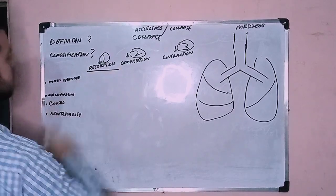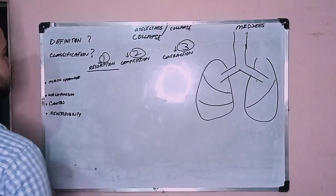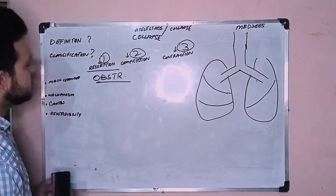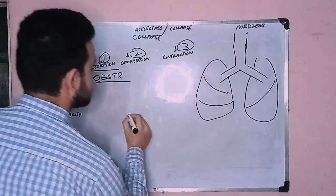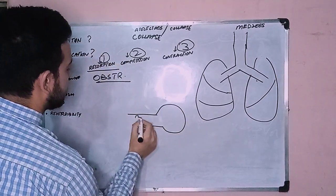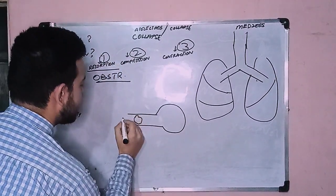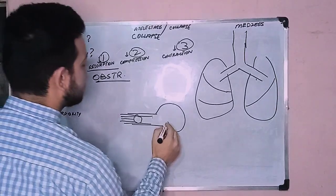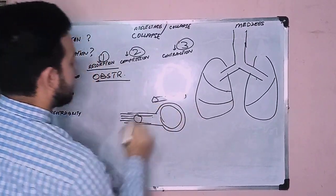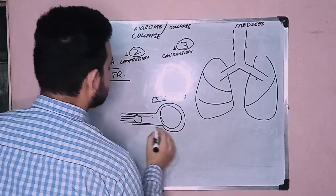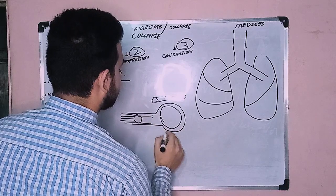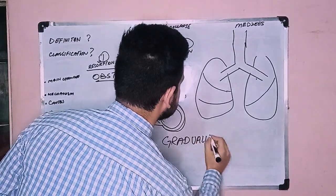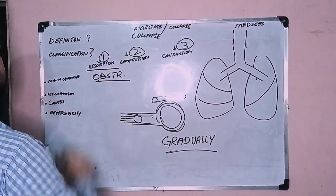First, let's discuss resorption atelectasis. There is an obstruction in the airway. Air cannot go in sufficiently — only a little bit can get through, which is not enough to oxygenate the blood. So there is hypoxia, and this air is not sufficient to inflate the alveoli. Gradually, not immediately, the alveoli collapse. This is resorption atelectasis.